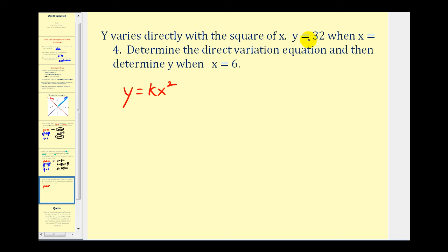So by performing substitution, Y equals 32 when X equals 4. And again, remember 4 is squared. So we'd have 32 equals, this would be 16K, dividing both sides by 16. For this problem, K is equal to 2. So our variation equation is Y equals 2 times X squared.